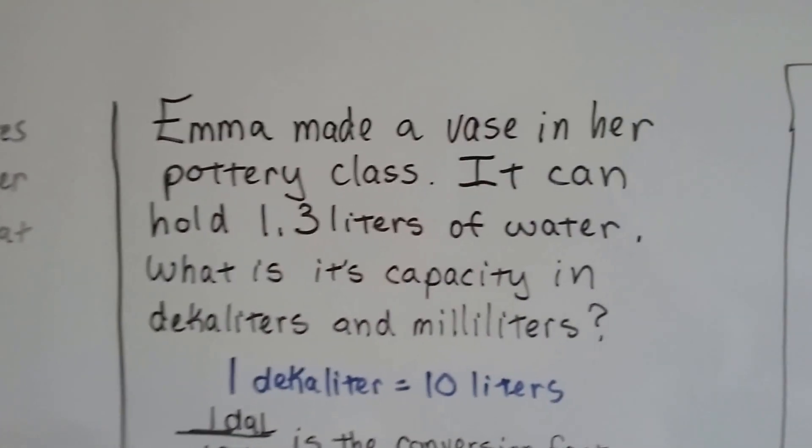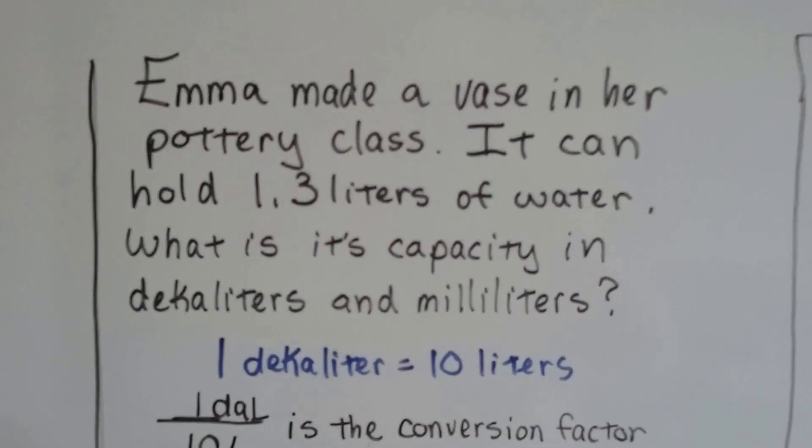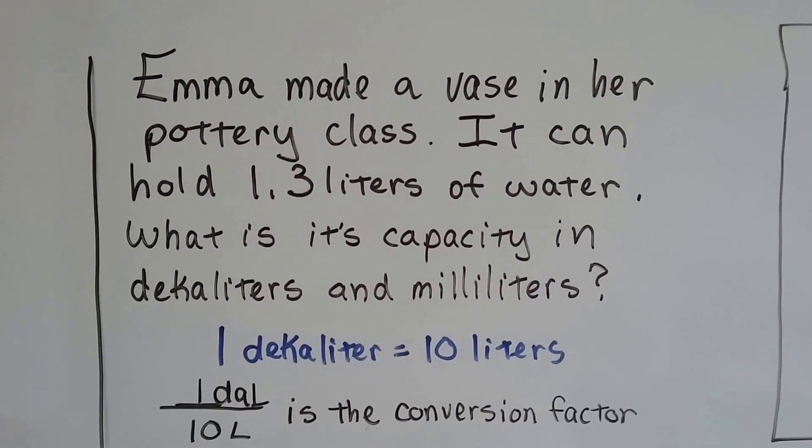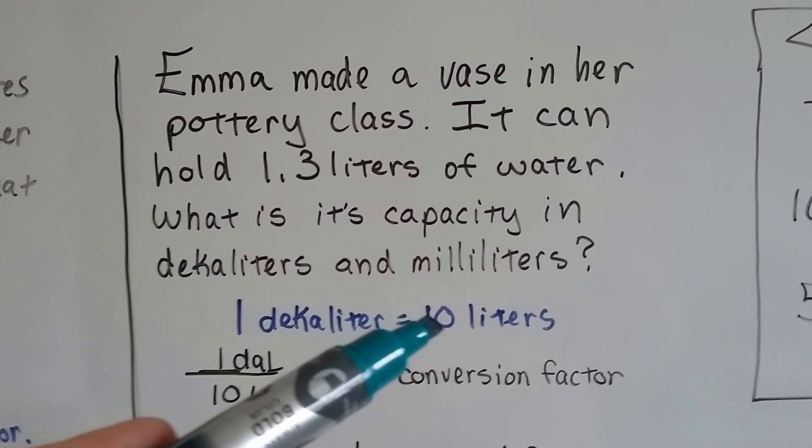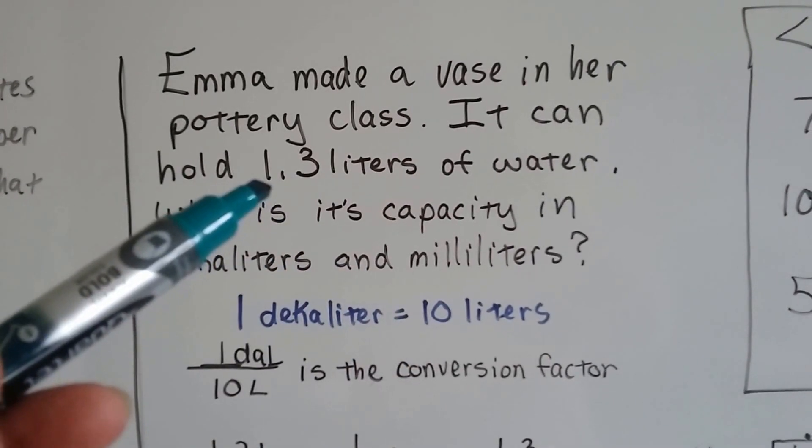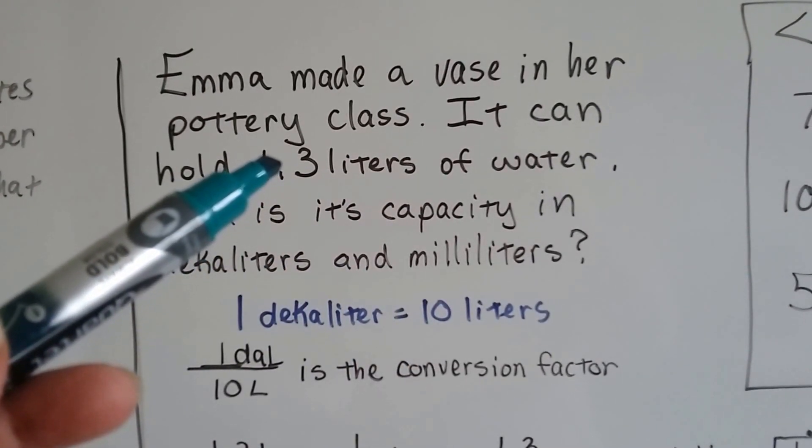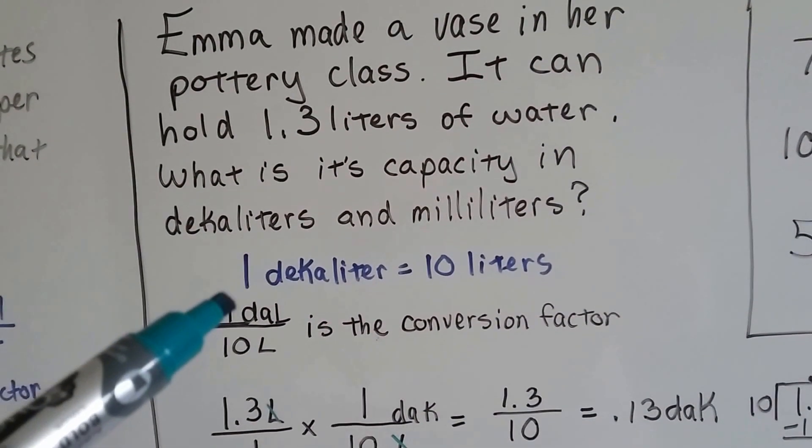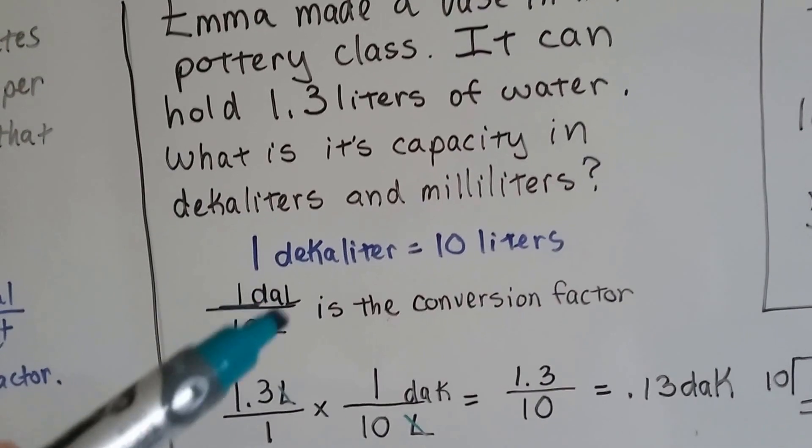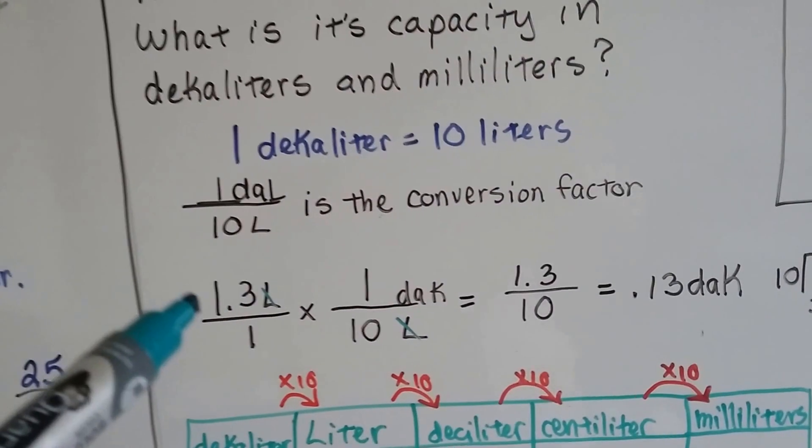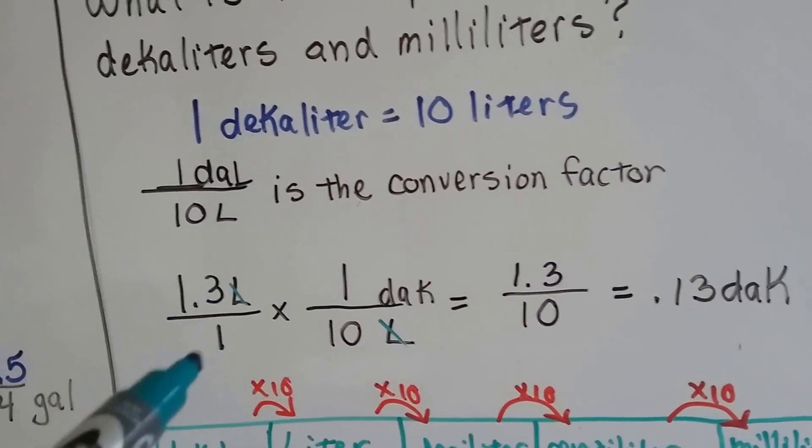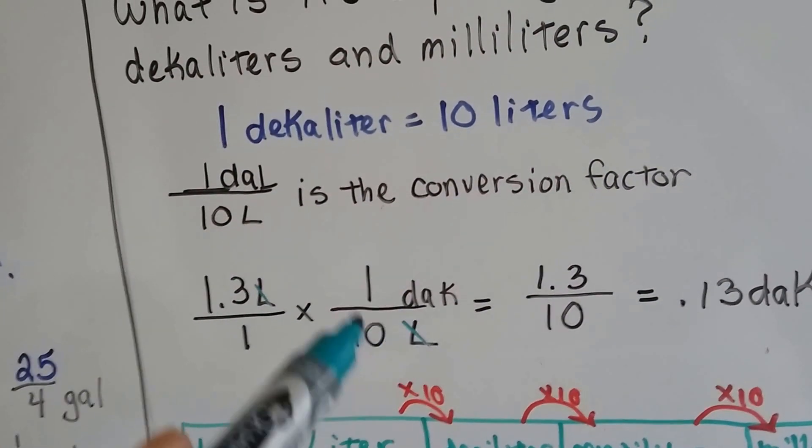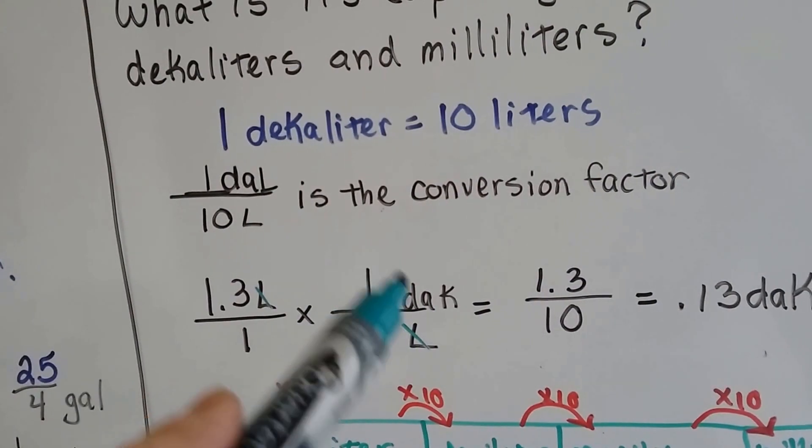Emma made a vase in her pottery class and it can hold 1.3 liters of water. What is the capacity in decaliters and milliliters? Well, 1 decaliter is 10 liters, and her vase only holds 1.3 liters. What's it going to be in decaliters? 1 decaliter equals 10 liters. So this is our conversion factor. Her vase holds 1.3 liters. We put it over 1 to make a fraction out of it, and we use the 1 decaliter over 10 liters conversion factor.